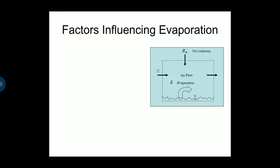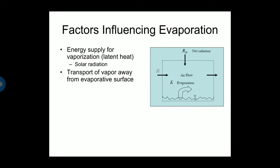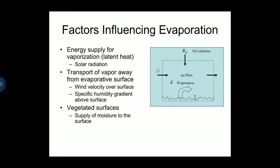Now let's see the factors influencing the evaporation process. Energy supply for vaporization is called latent heat. Solar radiation, transport of vapor away from the evaporative surface, wind velocity over surface, specific humidity gradient above the surface and vegetated surfaces, and supply of moisture to the surface are the factors influencing evaporation.